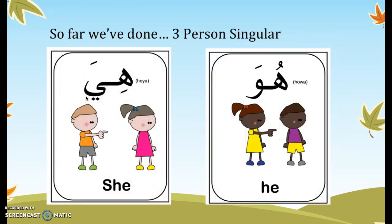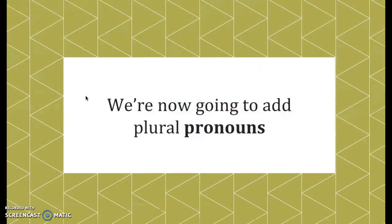The third pronouns we have done are third-person — when you're talking about someone: هو, he, and هي, she. So if you say هو طالب جديد, he's a new student. هي طالبة جديدة, she's a new student. All the pronouns we have done so far are singular — when you're talking about one person. Today we'll talk about how to talk about groups of people: the plural pronouns.